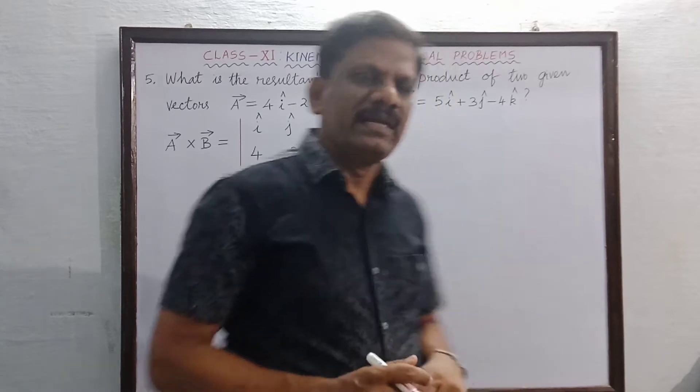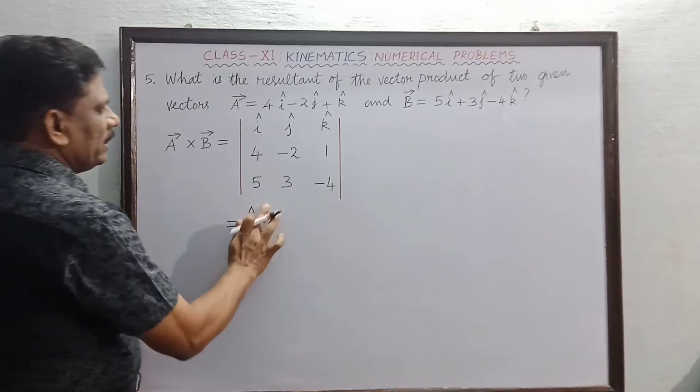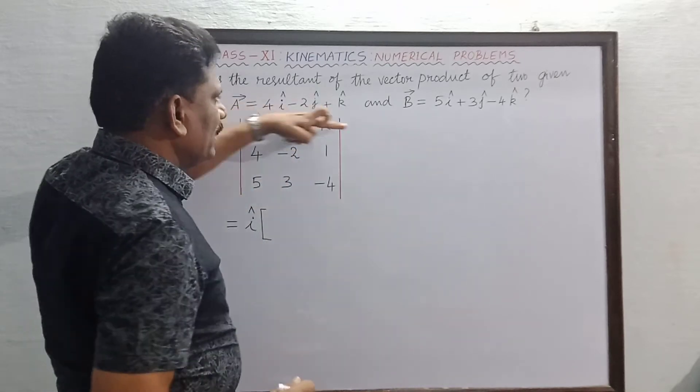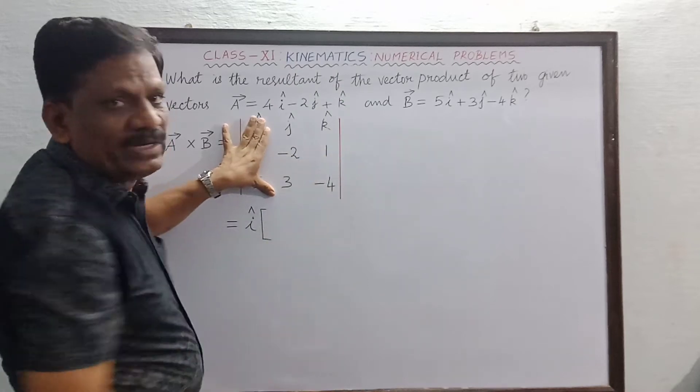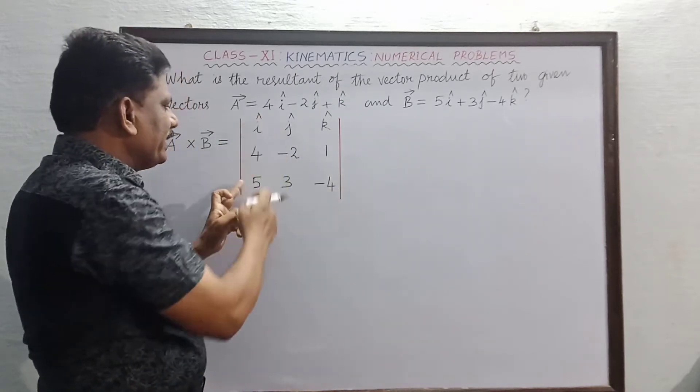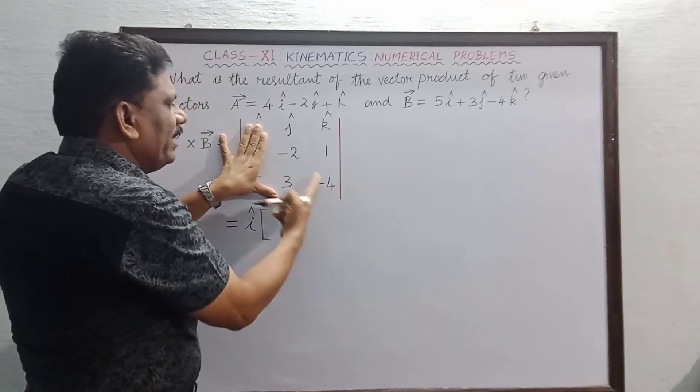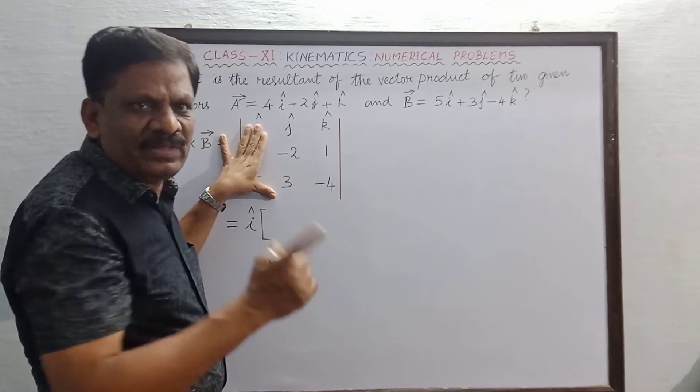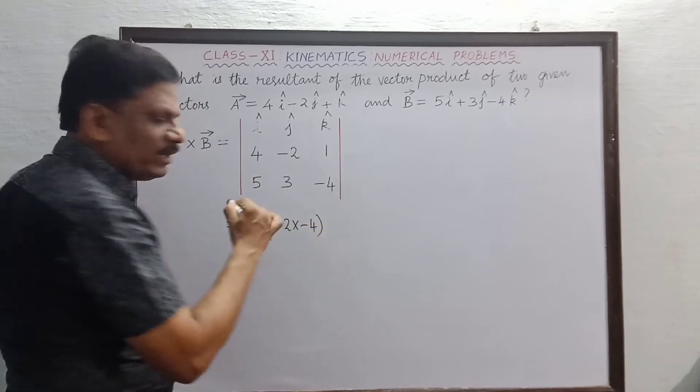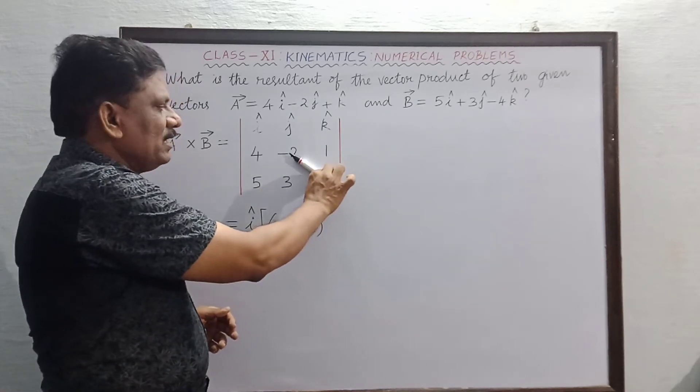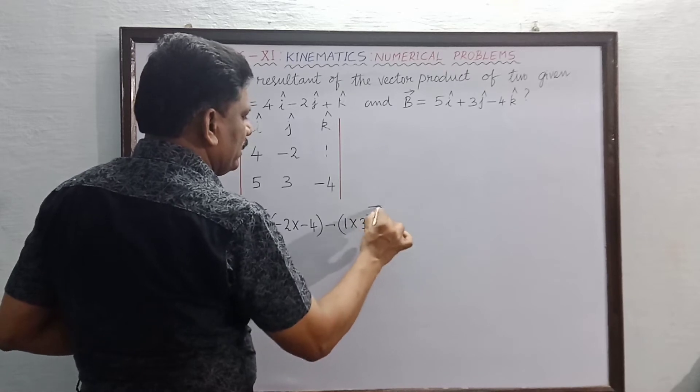So now let's expand. First i cap is equal to, A cross B vector is equal to i cap into, we have to cover this i and below i. The remaining four elements we have to see. Left side product is minus 2 into minus 4, minus the right side product, 1 into 3. This is the first i component.